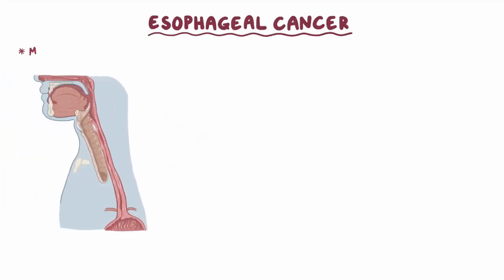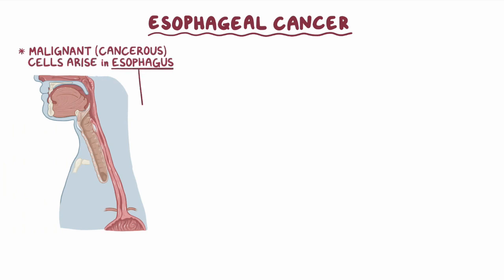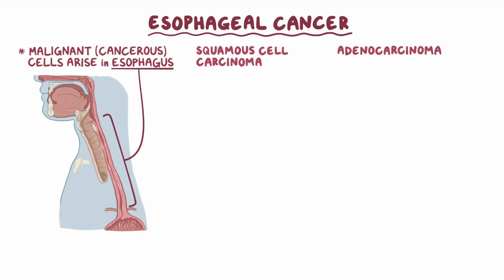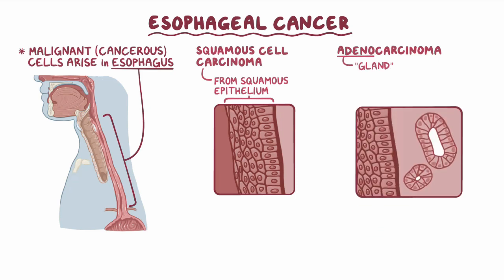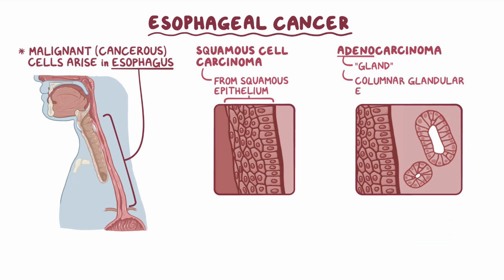Esophageal cancer is when malignant or cancerous cells arise in the esophagus. This cancer can appear in any segment of the esophagus, and it's further classified into squamous cell carcinoma and adenocarcinoma, depending on the type of cells it originates from. Squamous cell carcinoma arises from squamous epithelium, while adenocarcinoma — 'adeno' meaning gland — arises from columnar glandular epithelium.